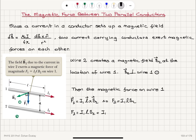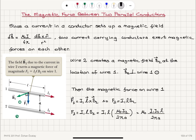We know the magnetic field due to this current-carrying wire: it is mu0 times I2 divided by 2pi A at distance A from the wire. So that gives us a force of mu0 I1 I2 L divided by 2pi A, and the direction is towards wire 2.